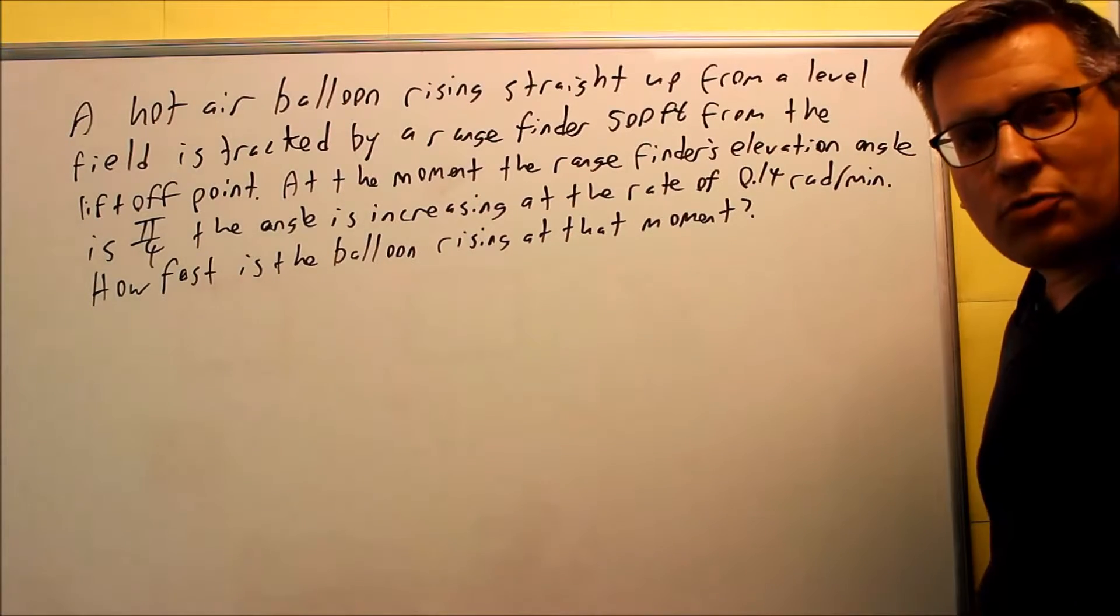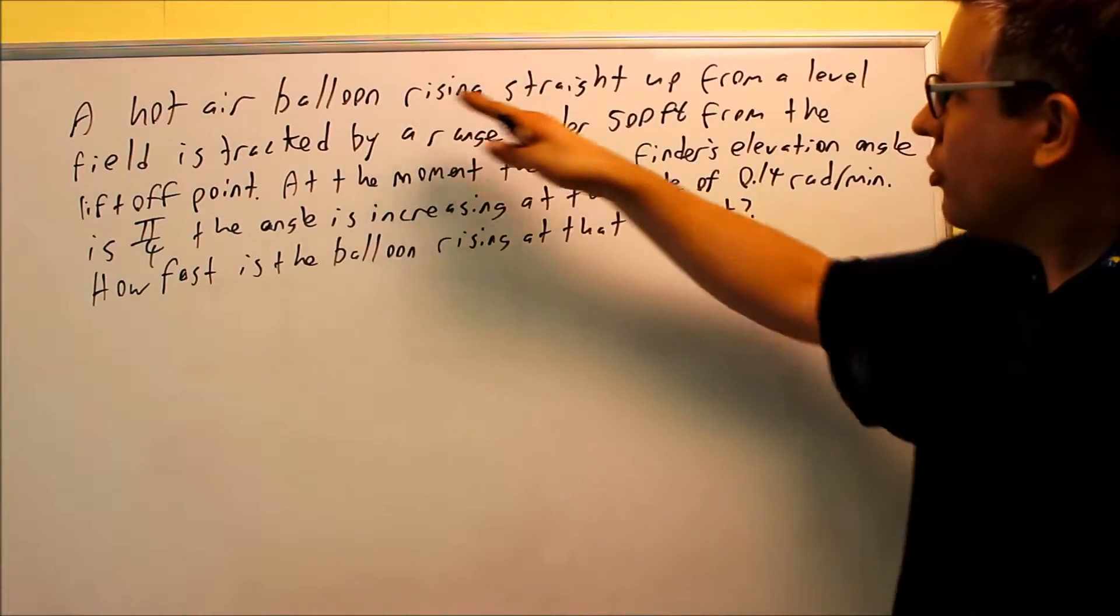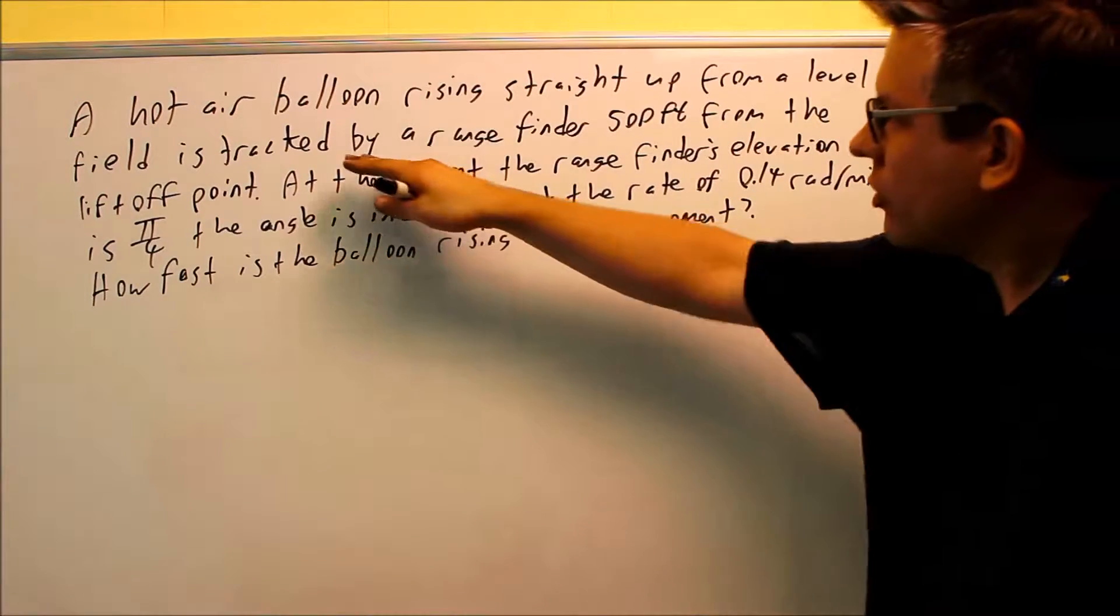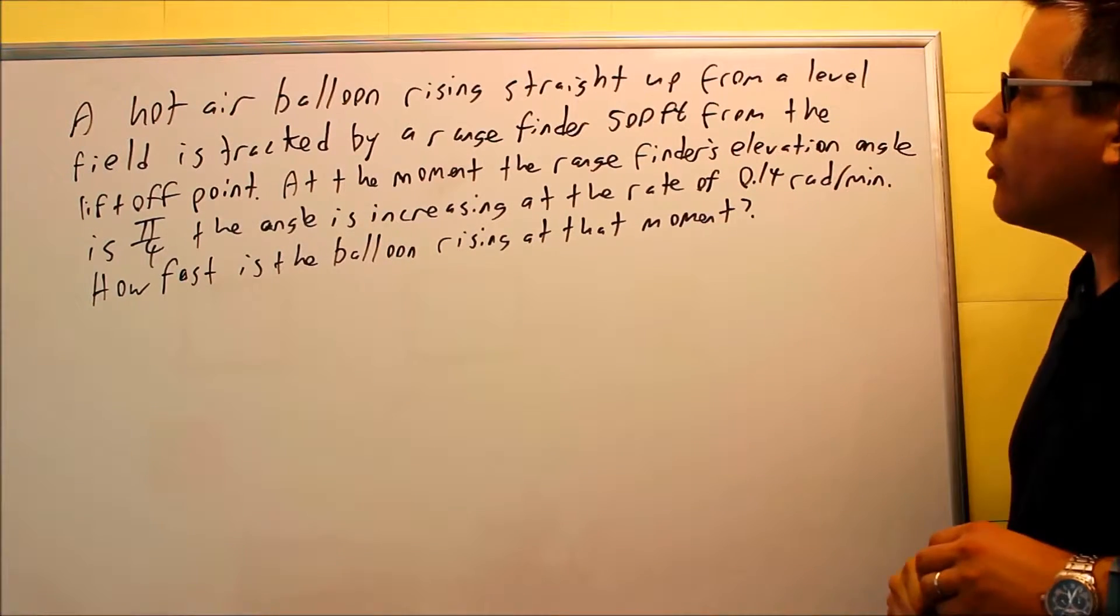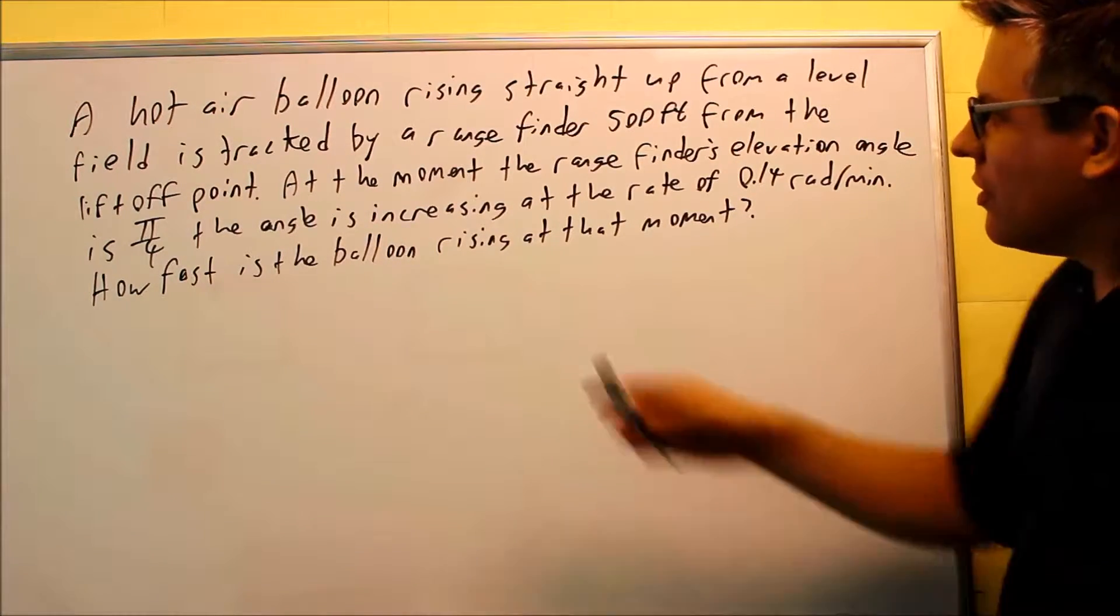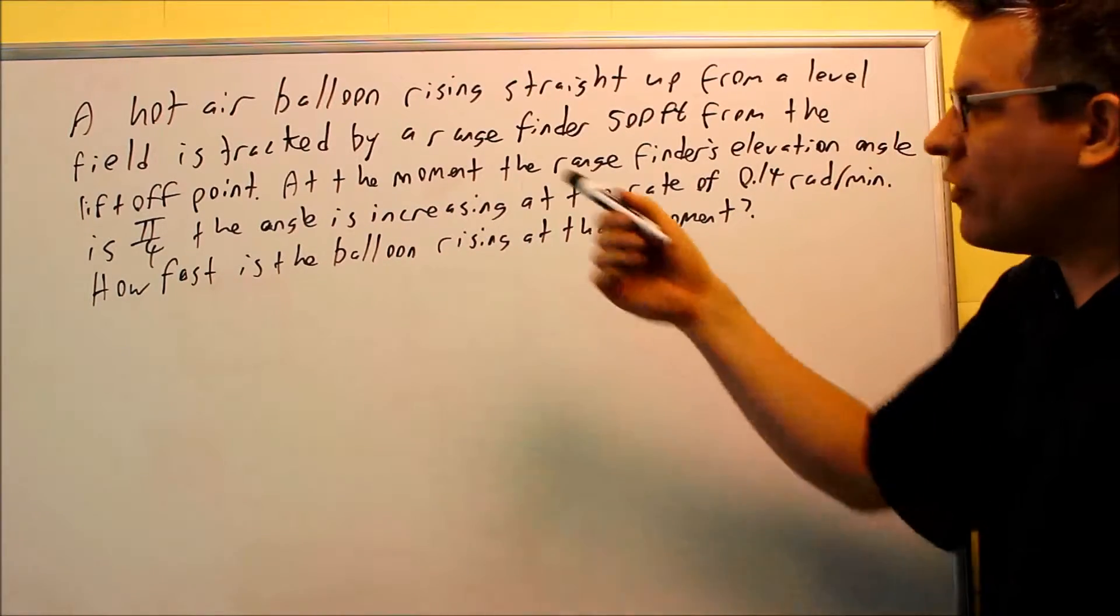This related rates problem is going to involve some tricks, so get ready. A hot air balloon rising straight up from a level field is tracked by a range finder 500 feet from the lift-off point. At the moment, the range finder's elevation angle is pi over 4.